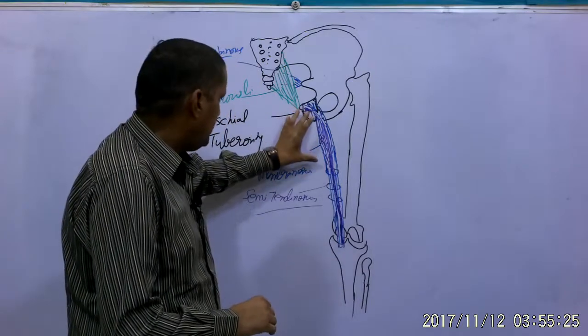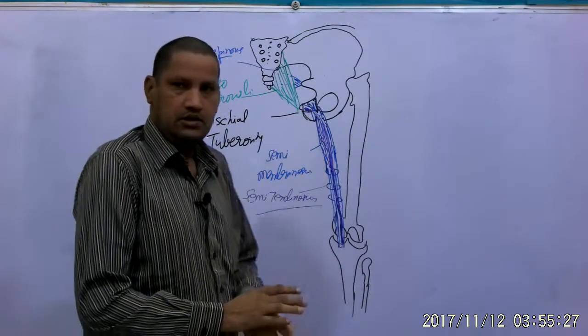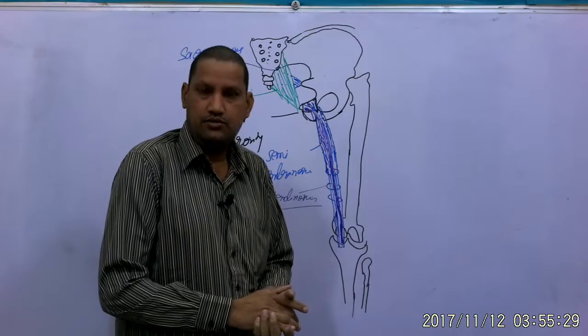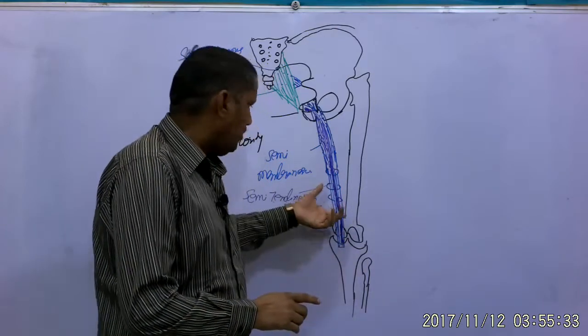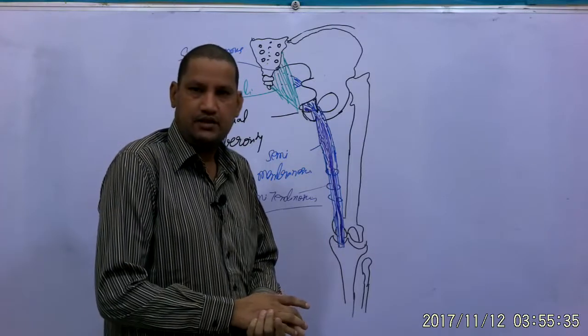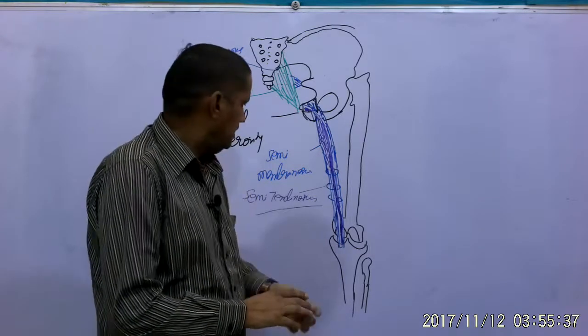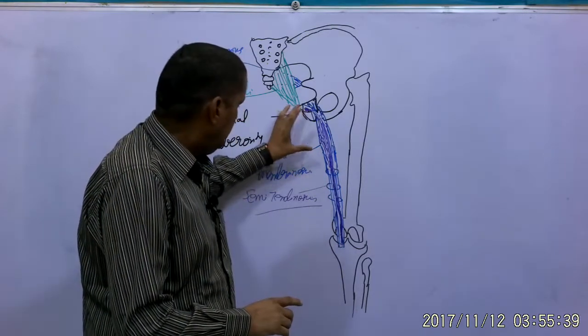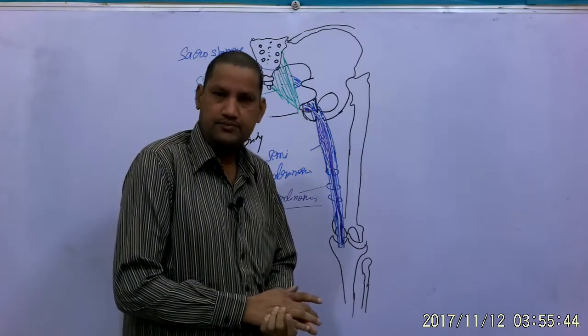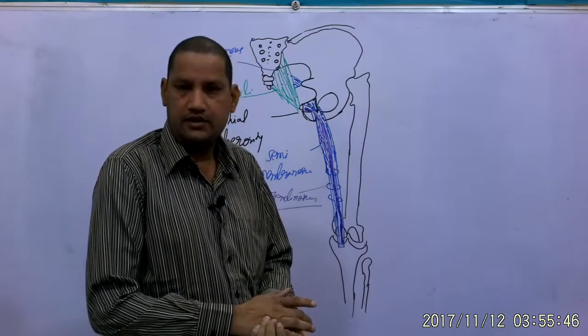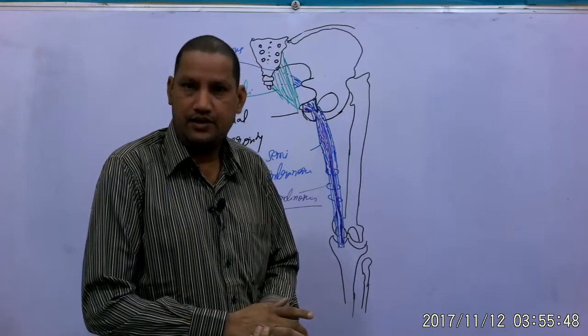The upper part of the muscle is membrane like so known as semi membranosis and lower part is fleshy and rounded.